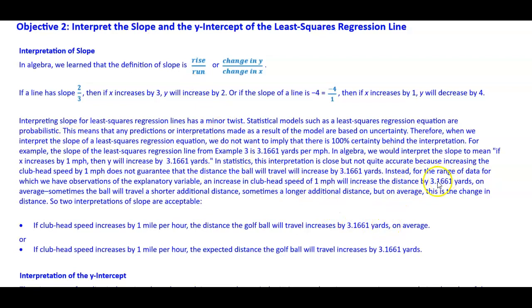Instead, for the range of data for which we have observations of the explanatory variable, an increase in club head speed of 1 mile per hour will increase the distance by 3.1661 yards on average. Sometimes the ball will travel a shorter additional distance, sometimes a longer additional distance, but on average, this is the change in distance. So two interpretations of slope are acceptable.